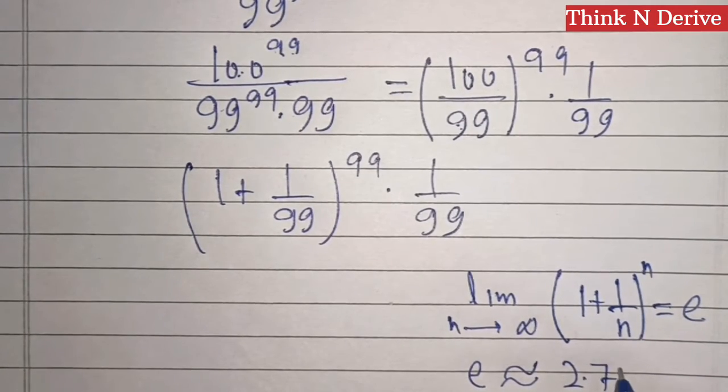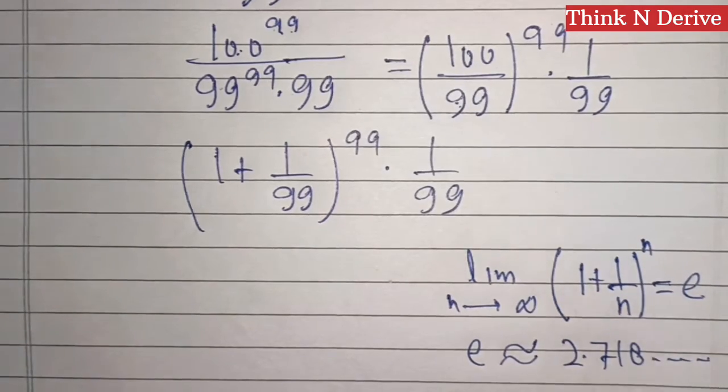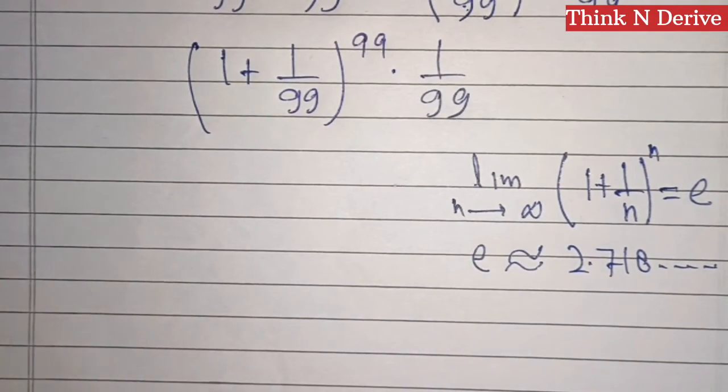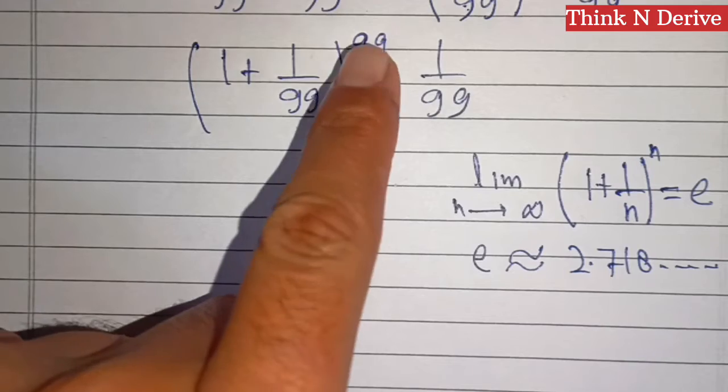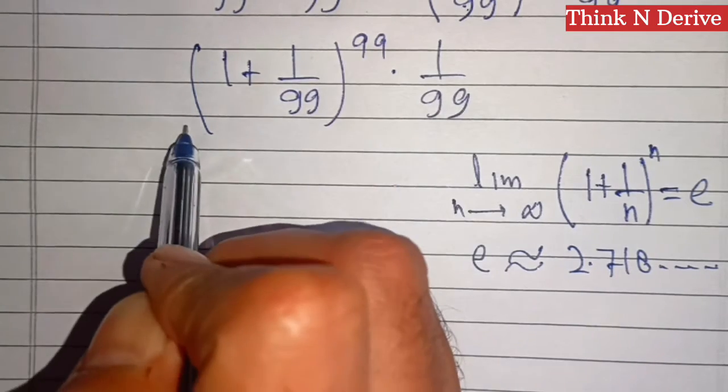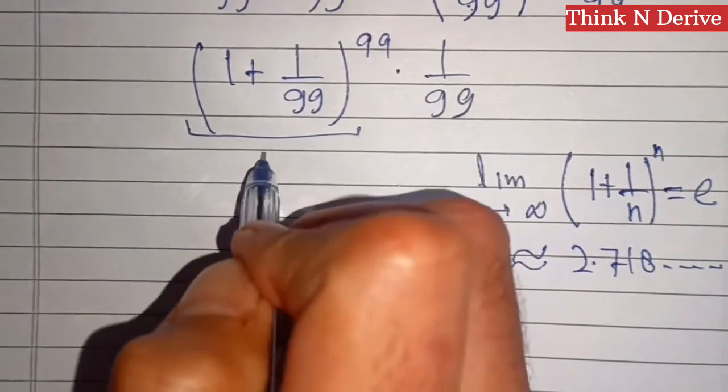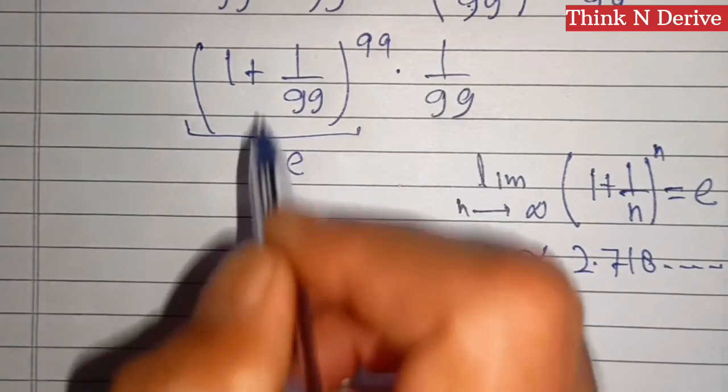Now here, n is 99, so that means this expression will be less than e. We'll write this as less than e times 1/99.